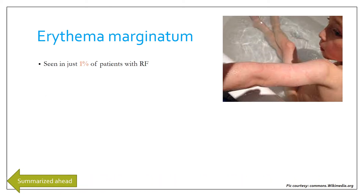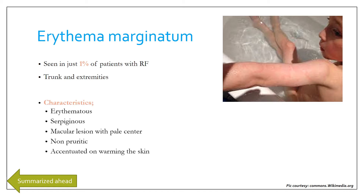Erythema marginatum is seen in just 1% of patients with acute rheumatic fever. It involves the trunk and extremities but spares the face. It is erythematous especially at the margins, serpiginous (snake-like), a macular lesion not raised from the skin, with a pale centre. It is non-pruritic, which is important for diagnosis, and is accentuated on warming the skin.